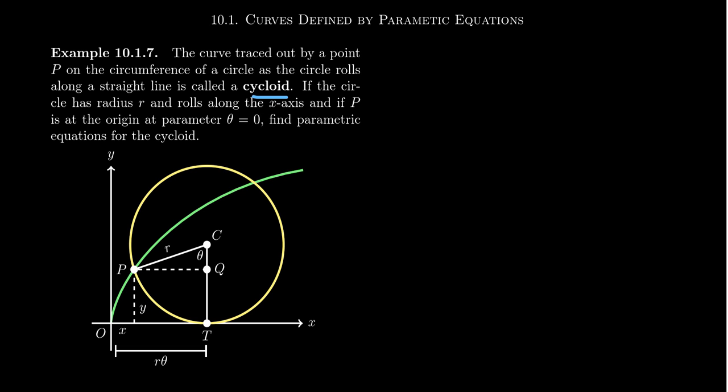Consider the line segment PC and CT. These are radii of the circle, so their distances are both going to be R. The length of PC and the length of CT, these are both R because they're radii of the circle.